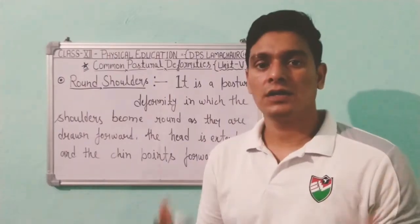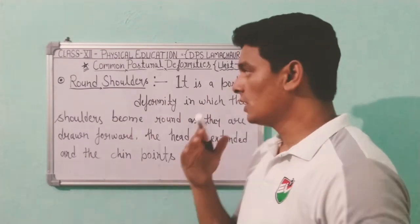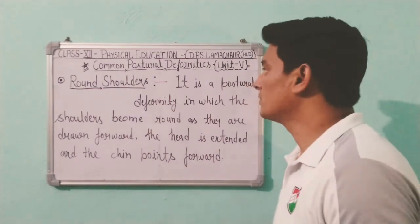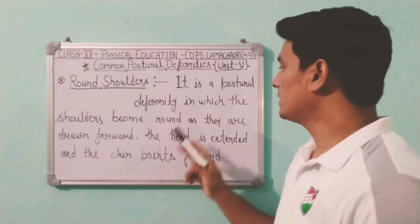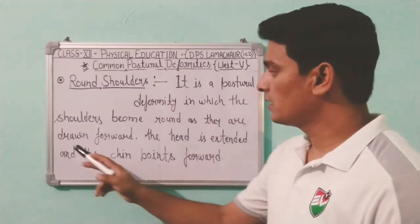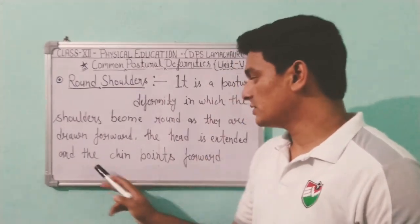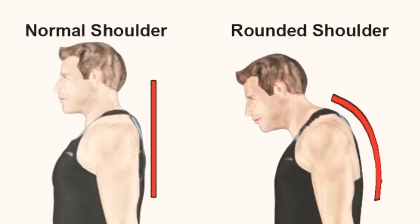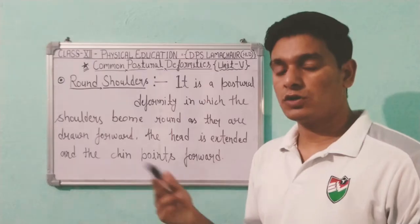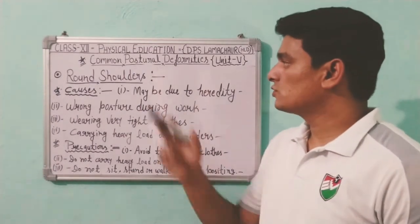The next deformity is round shoulder, which is mostly found in girls. It is a postural deformity in which the shoulders become round as they are drawn forward, the head is extended, and the chin points forward. You can understand the round shoulder deformity with the help of the picture shown on screen.